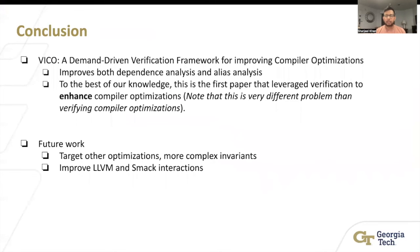So in conclusion, VICO is a demand-driven verification framework for improving compiler optimization. It improves both dependency analysis and alias analysis. And to the best of our knowledge, this is the first paper that leverages verification to enhance compiler optimizations. In terms of future work, we want to target other optimizations, and we want to tackle more complex alias cases.